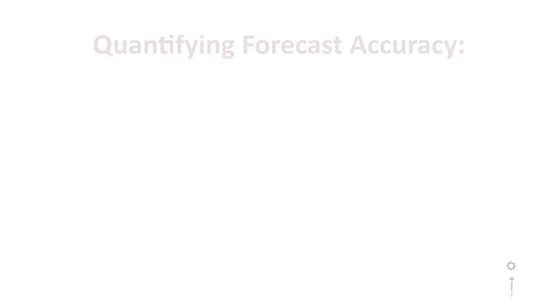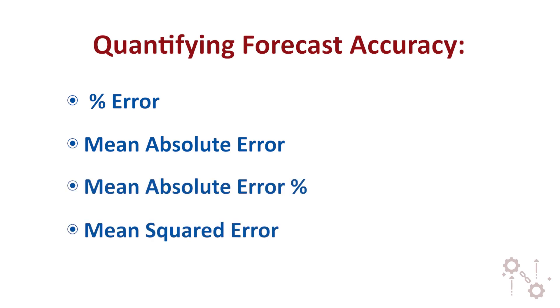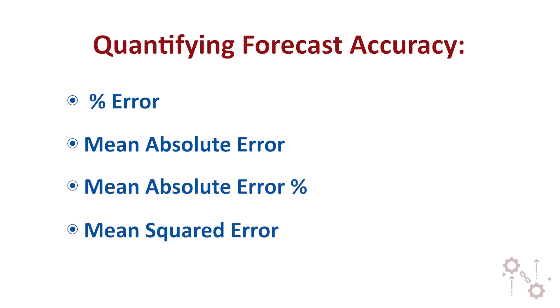Some common statistical measures of quantifying forecast accuracy and forecast error include percentage error, mean absolute error, mean absolute error percentage, and mean squared error. Different numbers can paint a very different picture, so check you know what you're working with.